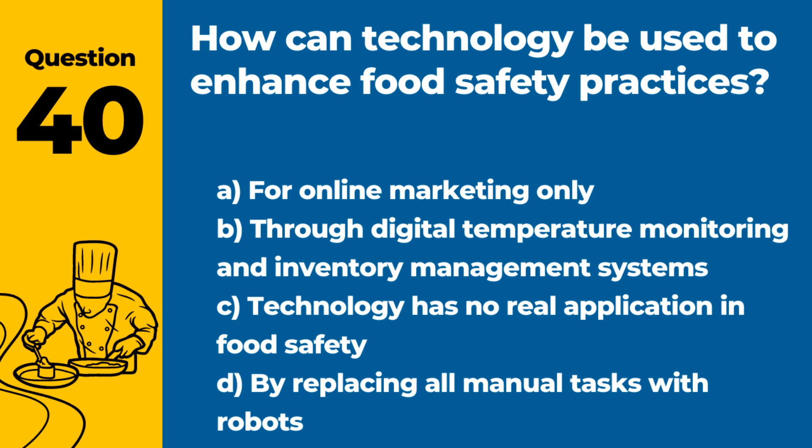Question 40. How can technology be used to enhance food safety practices? Answer: B. Through digital temperature monitoring and inventory management systems. Technology can greatly improve the efficiency and effectiveness of food safety practices.